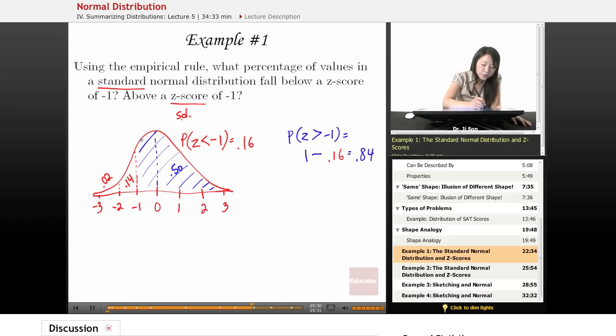And then add to it this little part right here, which we know is 34%. So when we add those together, that also gives us 84% of the curve.